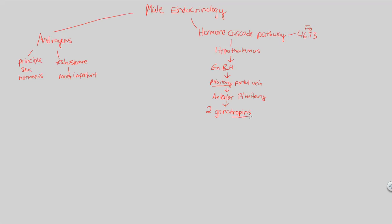These gonadotropins — 'tropic' meaning they stimulate other organs — specifically target the gonads. The first gonadotropin is LH, luteinizing hormone, released from the anterior pituitary due to GnRH from the hypothalamus. LH travels through the bloodstream to the gonads. Its specific target is the Leydig cells, found within the testes. These Leydig cells are named after Franz Leydig, who discovered them around 1850.